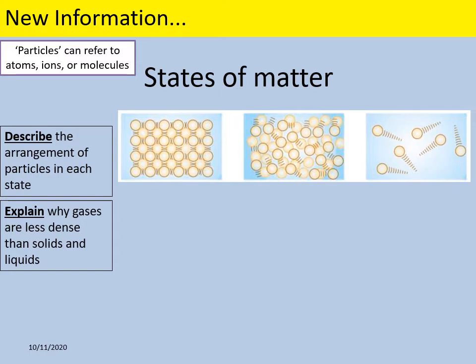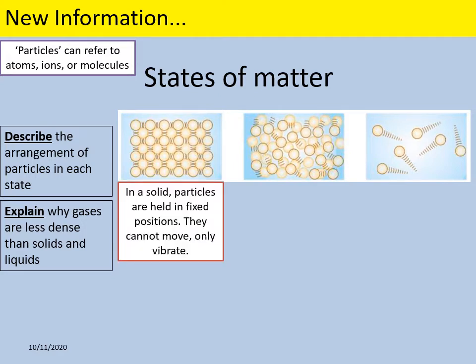The three pictures on the screen here you should recognize as representations of the three states of matter. Now in these descriptions I'm going to be talking about particles. In this topic particles might refer to atoms, to ions, or to molecules but I'm just going to use the word particles to describe each of these circles in the diagram. So in a solid the particles are held in fixed positions. There are forces of attraction between them holding them there. They can't move, they can only vibrate, so their shape is fixed.